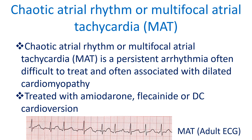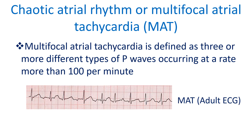Chaotic atrial rhythm, or multifocal atrial tachycardia, is a persistent arrhythmia often difficult to treat and often associated with dilated cardiomyopathy. It is treated with amiodarone, flecainide, or DC cardioversion. Multifocal atrial tachycardia is defined as 3 or more different types of P waves occurring at a rate of more than 100 per minute.